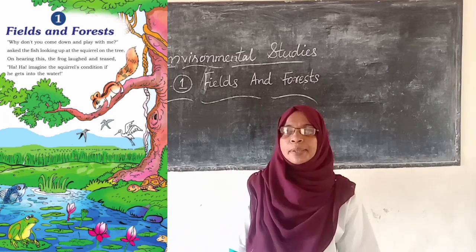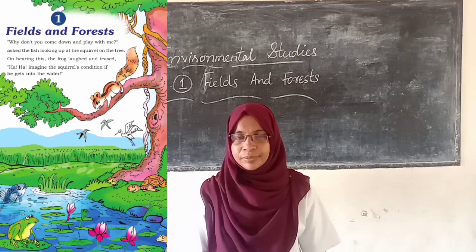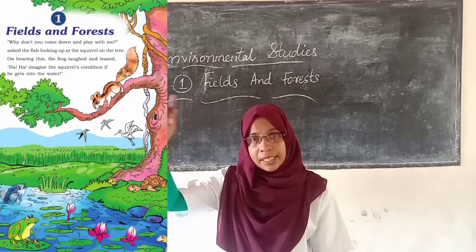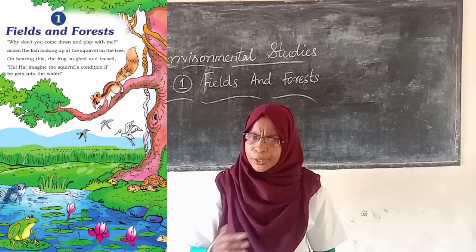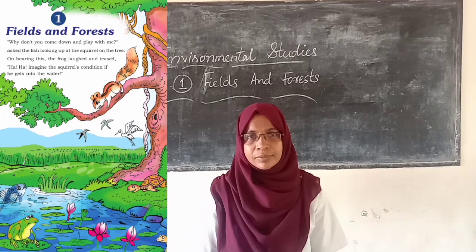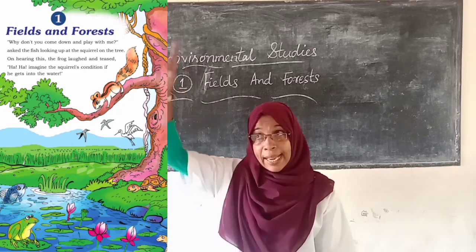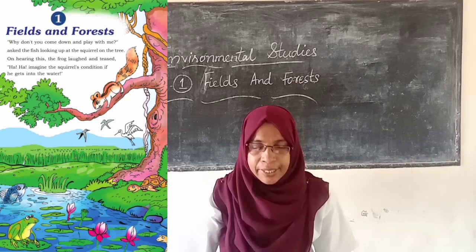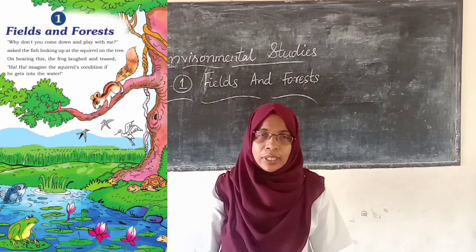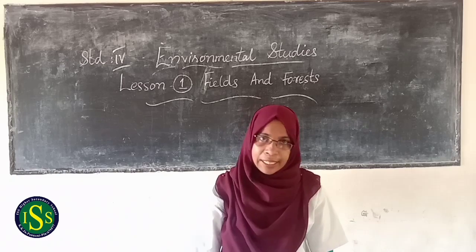There is a conversation between the frog, the fish, and the squirrel. The fish asked the squirrel: 'Why don't you come down and play with me?' The squirrel asked: 'Can you run and jump on the tree?' In this conversation, we can conclude that each organism has its own characteristics.